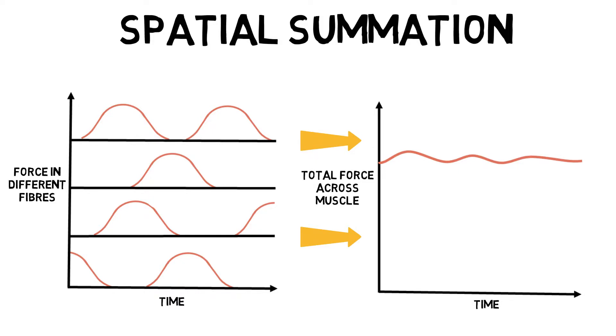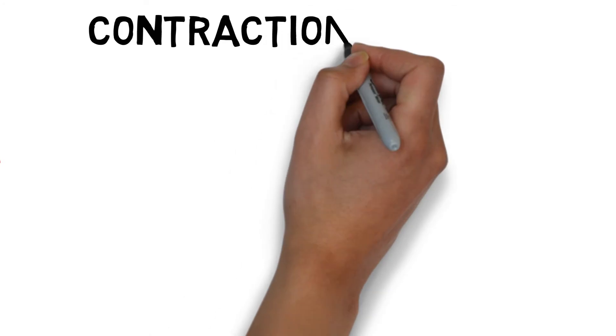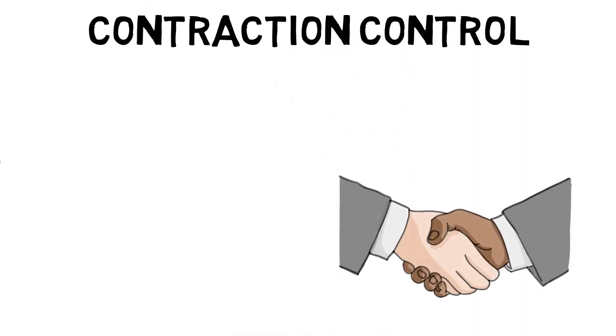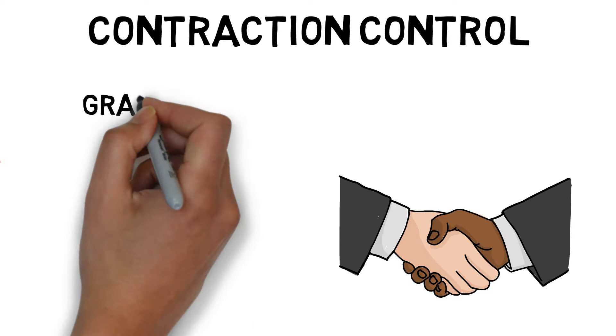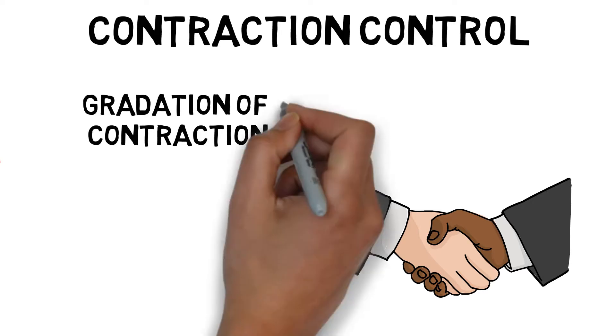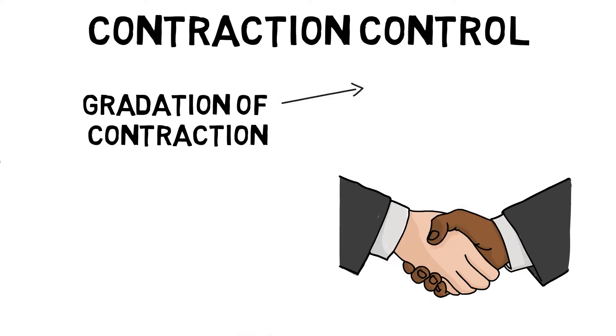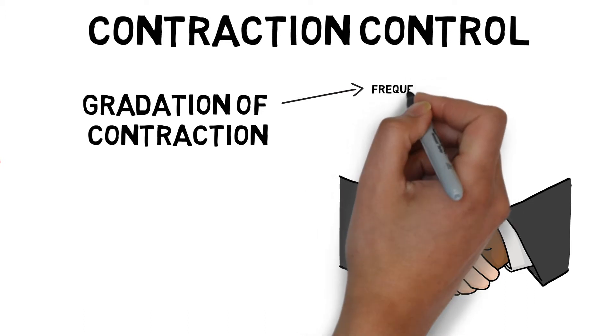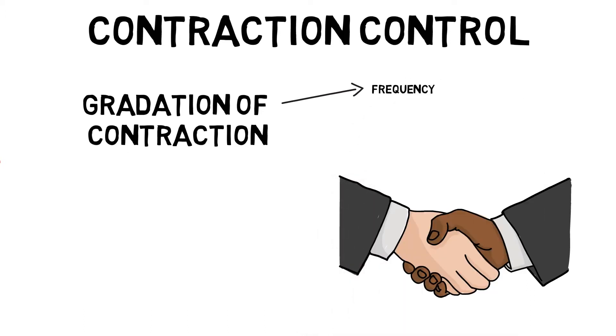In order to control our contractions, such as knowing the difference in force between shaking someone's hand and opening a stubborn jar, we have the ability to vary the produced force. This is known as gradation of contraction. This can be achieved in two ways: we can increase the frequency of stimulus, a bit like wave summation, and vary the number of motor units that are recruited.